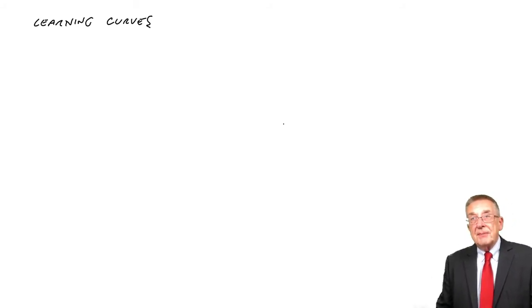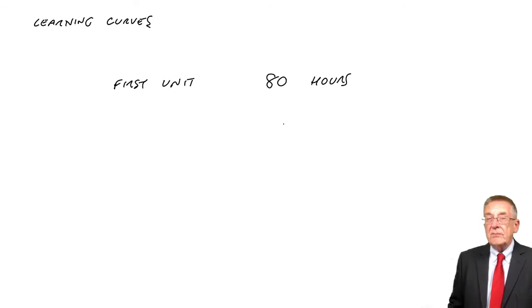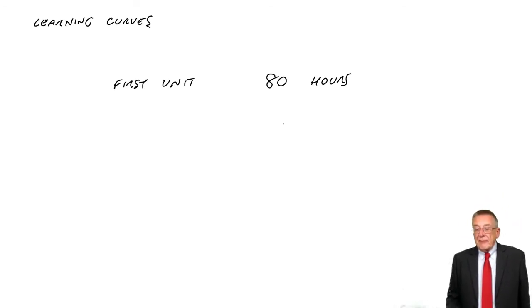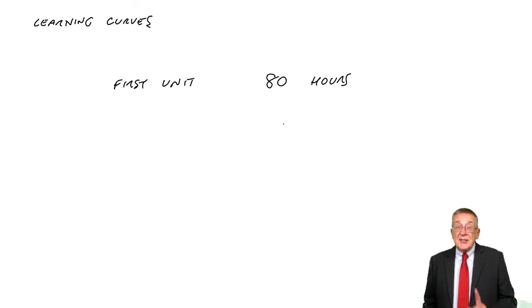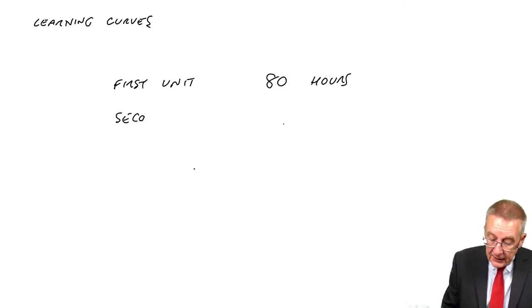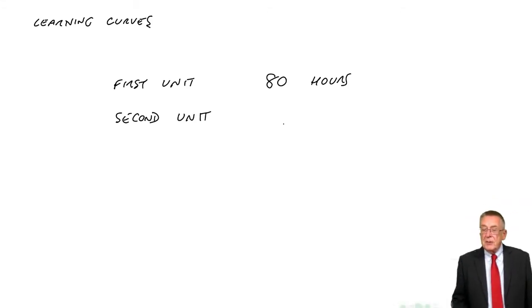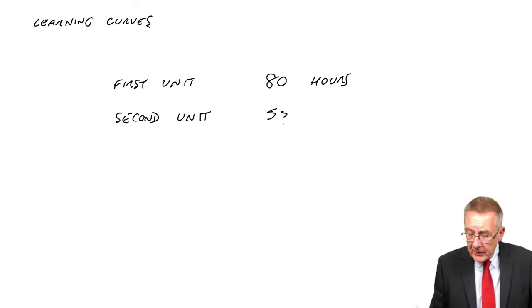Suppose I make desks, or I'm starting to make desks. And we make one. So the first desk, the first unit, takes, let's say, 80 hours. And then get them to make a second one. And of course, you expect them to be faster. The second unit, let's say, takes them 55 hours.